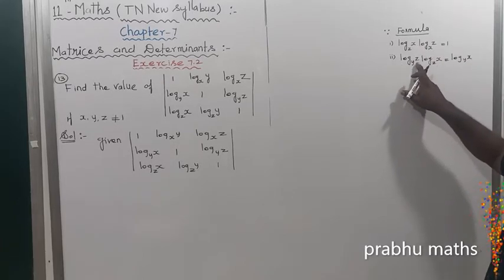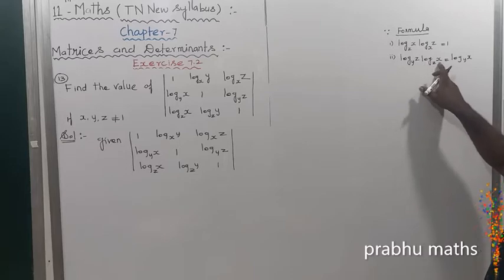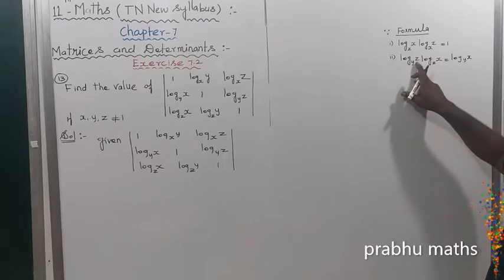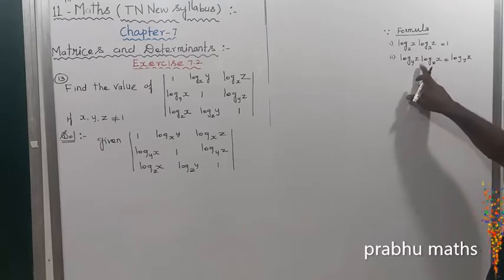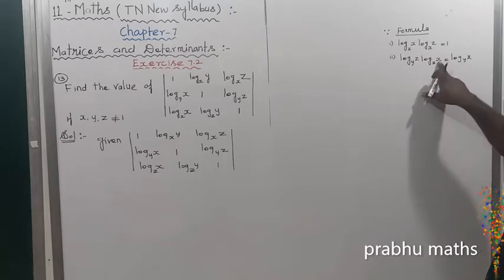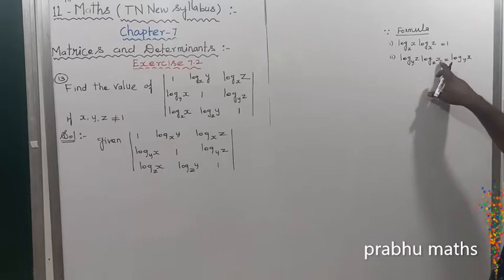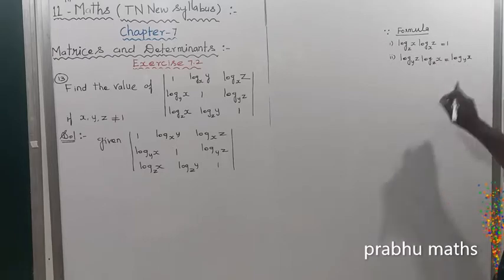So this one: log y z times log z x is equal to — this is going to the base times this value, that is called log y x.